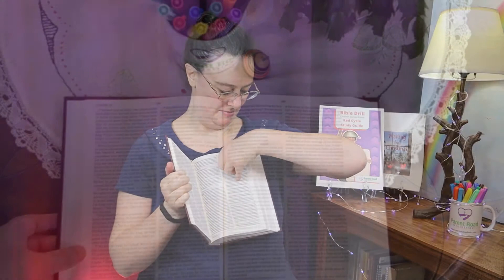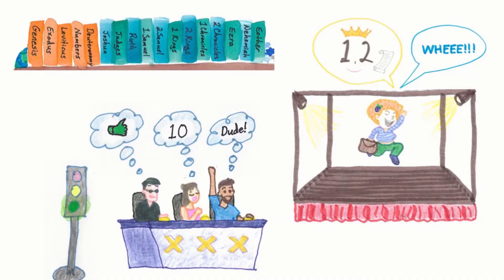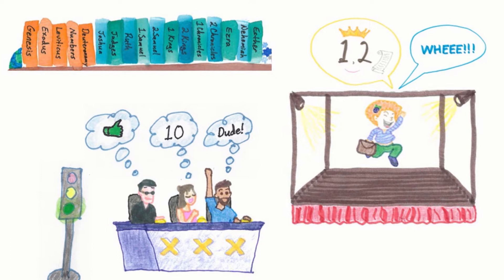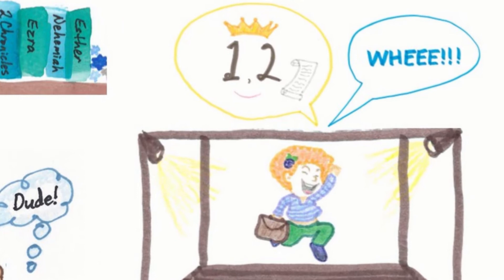Then remember — 'Dude!' Joshua judges Ruth. And Ruth shouts, 'One, two, whee!' before going off to her job, which in the Bible is pronounced Job. The books of Old Testament history tell us what happened to God's people as He chose a specific people, the Israelites, and made them into His special people. That's what the books of Old Testament history are about.